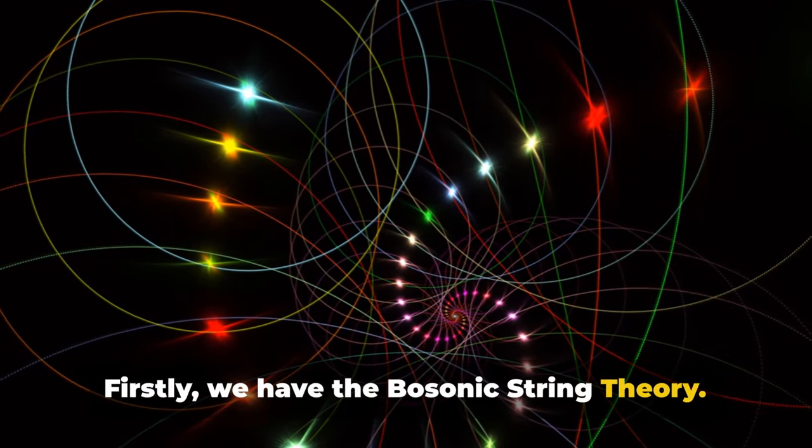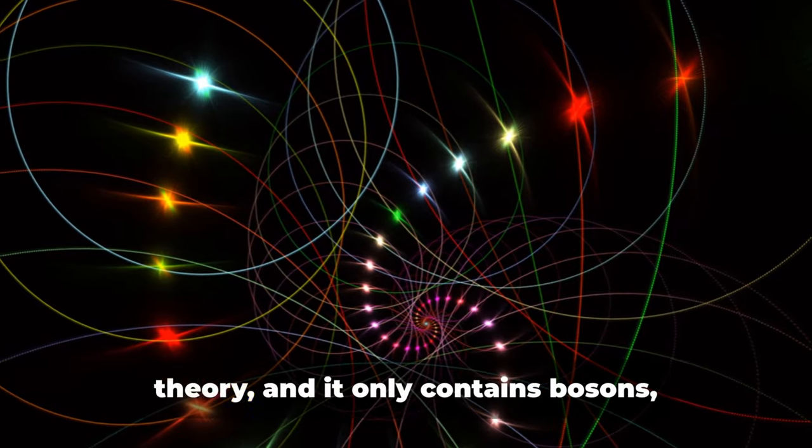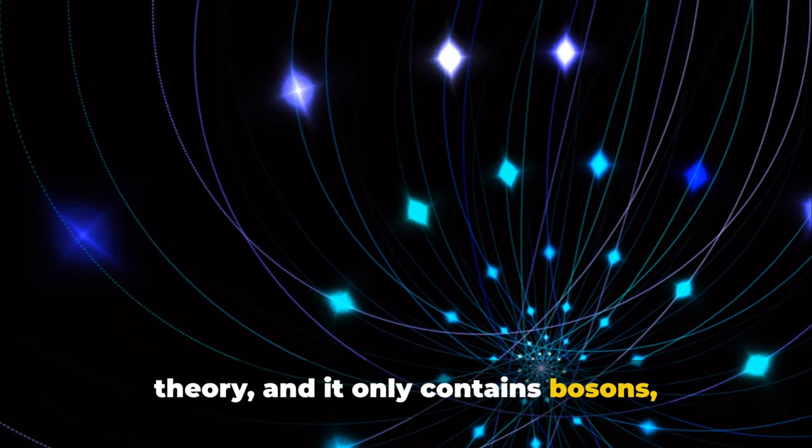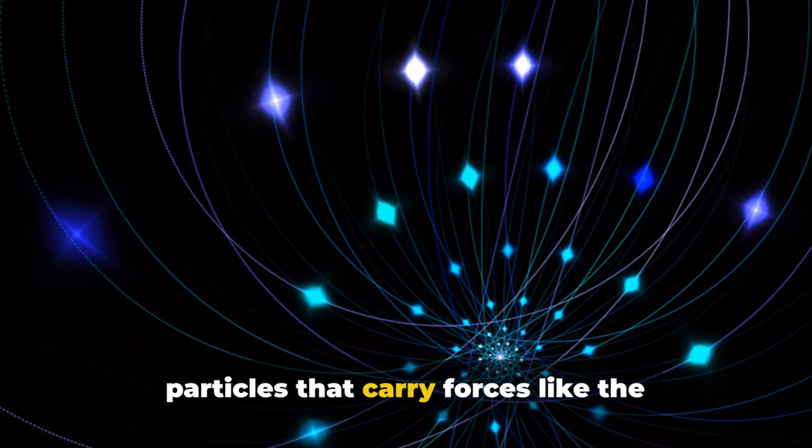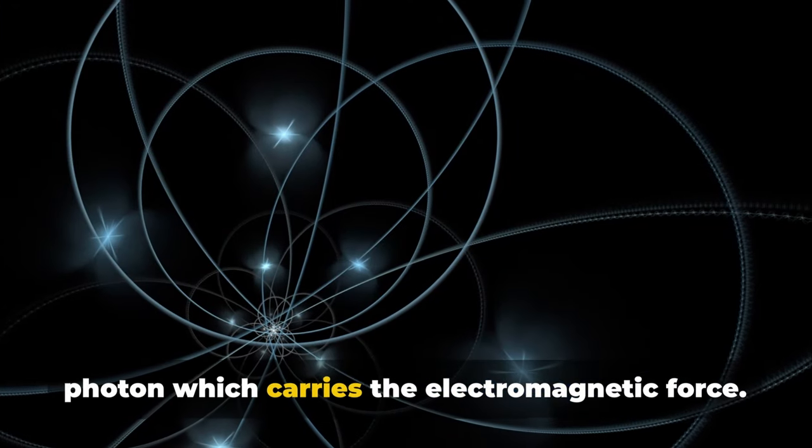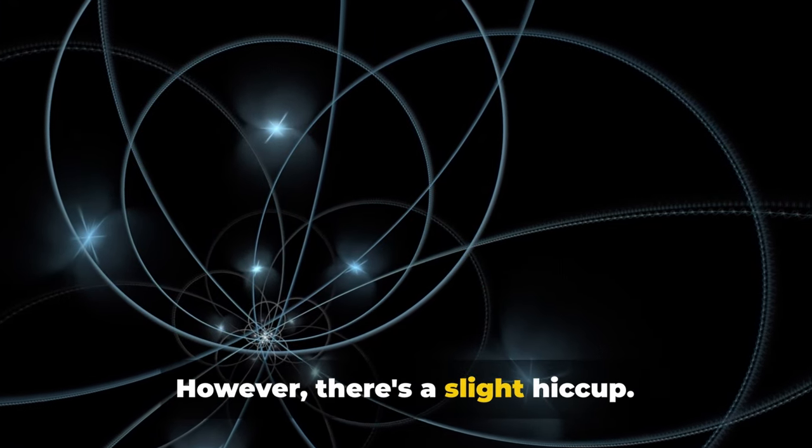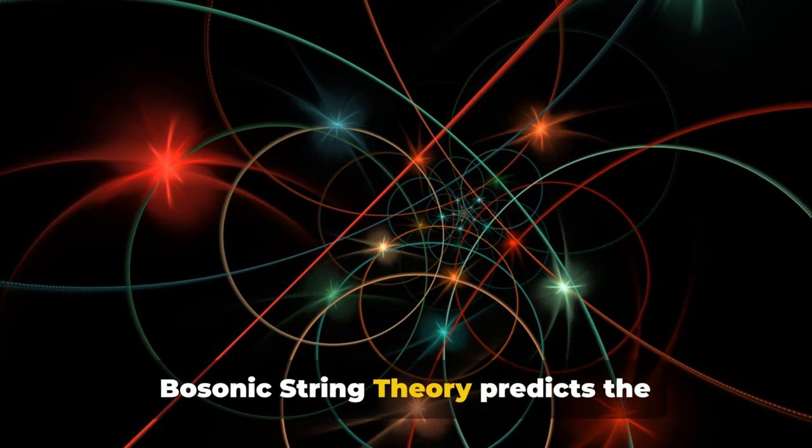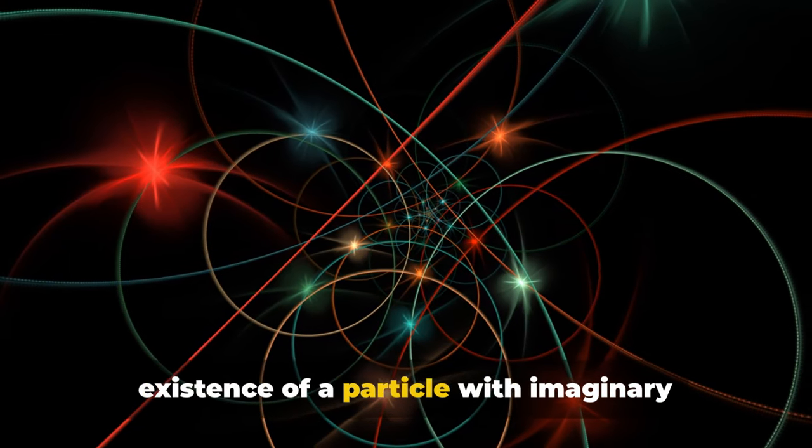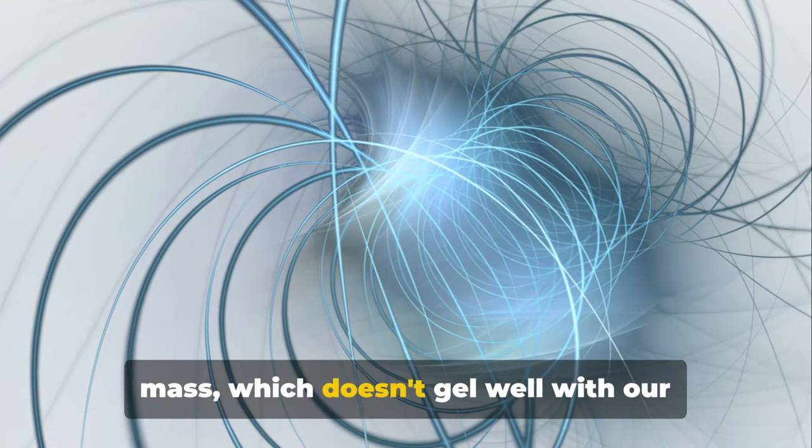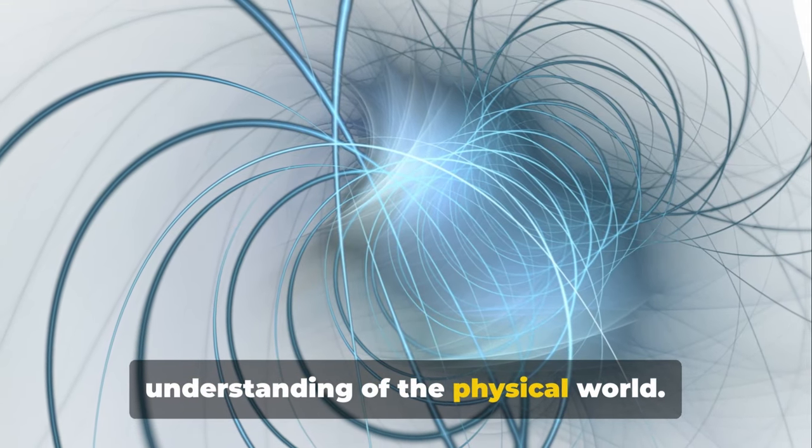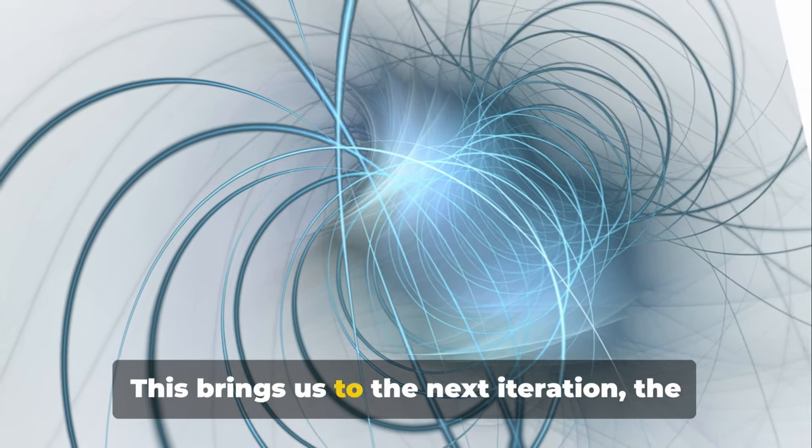Firstly, we have the bosonic string theory. This is the original version of string theory, and it only contains bosons, particles that carry forces like the photon, which carries the electromagnetic force. However, there's a slight hiccup. Bosonic string theory predicts the existence of a particle with imaginary mass, which doesn't gel well with our understanding of the physical world.